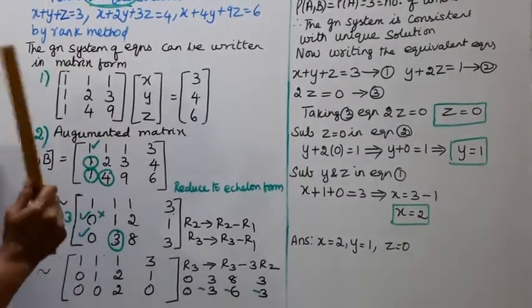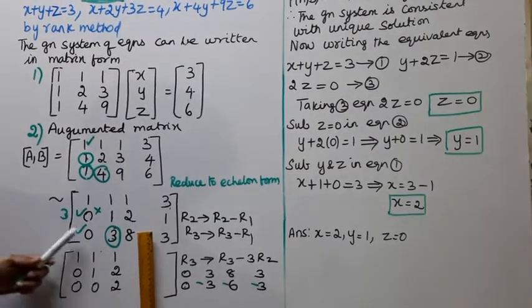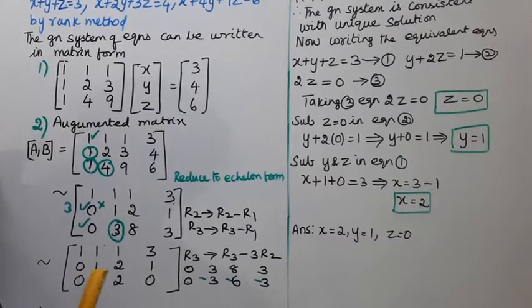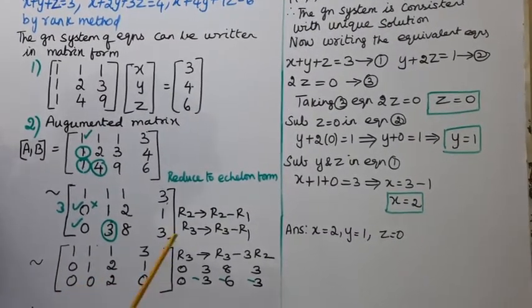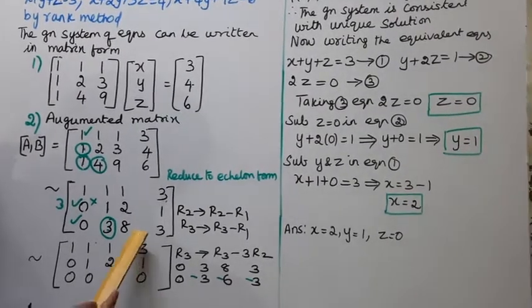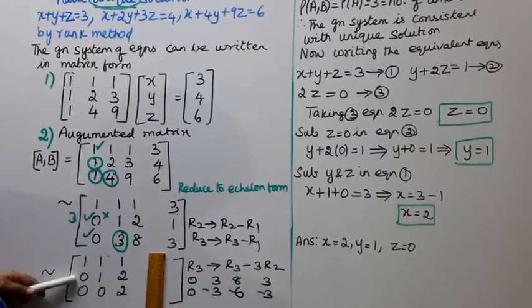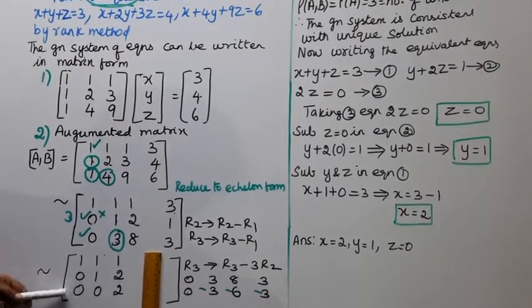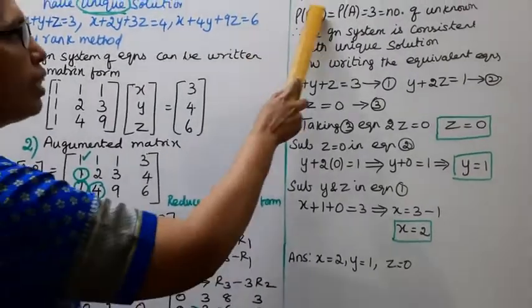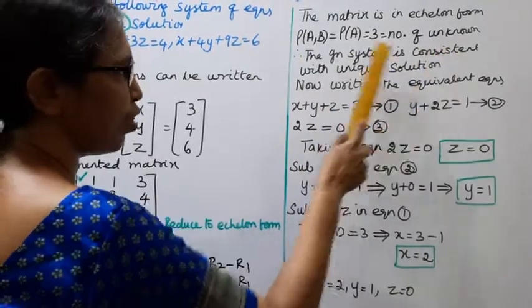Now for unique solution, rank of A,B and rank of A. We can get 3. This is rank of A,B. This is rank of A. Rank of A,B is 3. Non-zero rows. Rank of A,B is 3. The matrix is in echelon form. Rank of A,B, rank of A, again 3, equal to number of unknowns. The given system is consistent with unique solution.